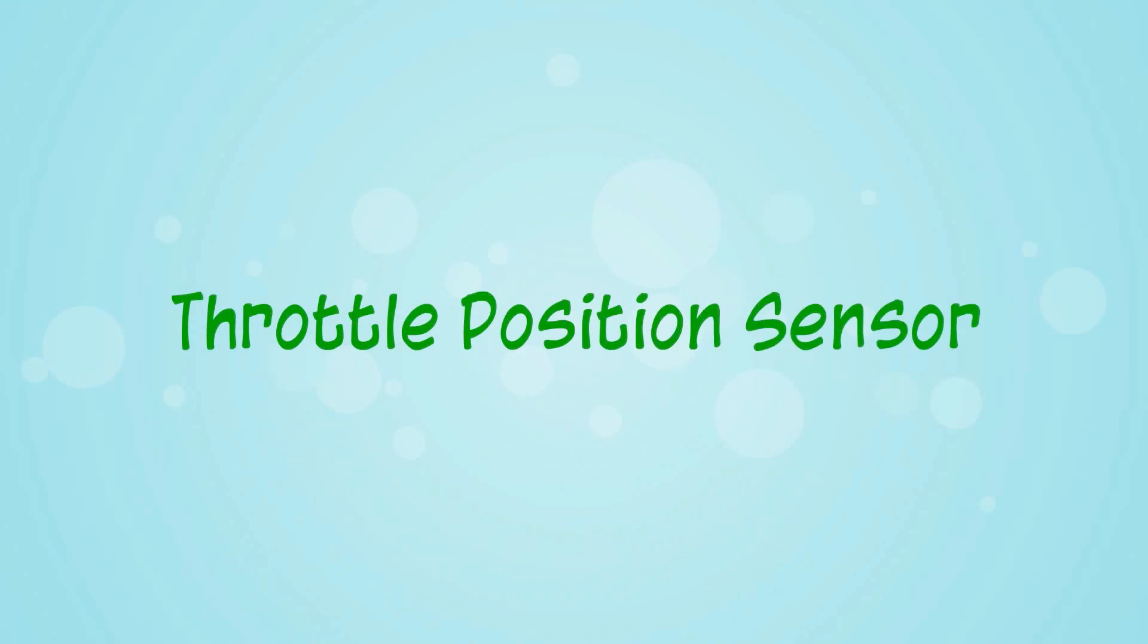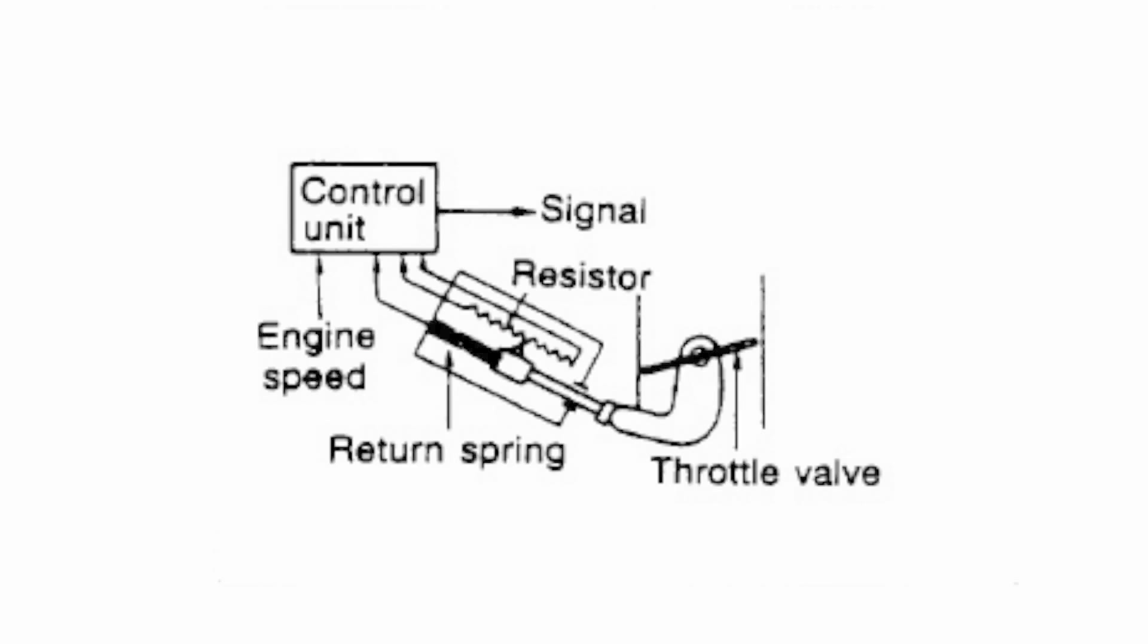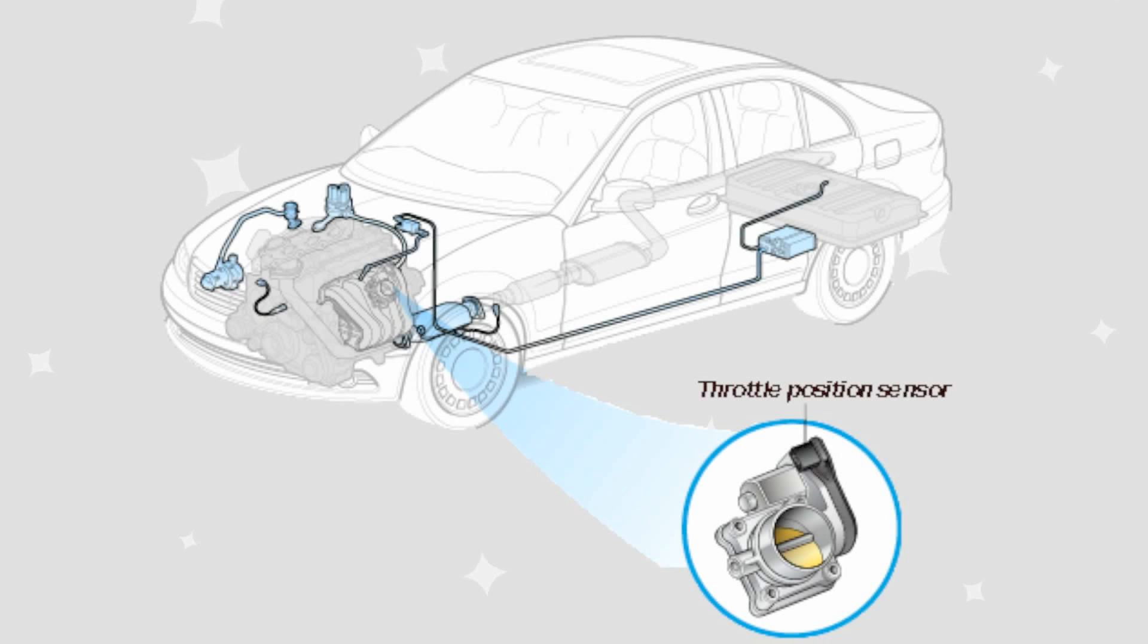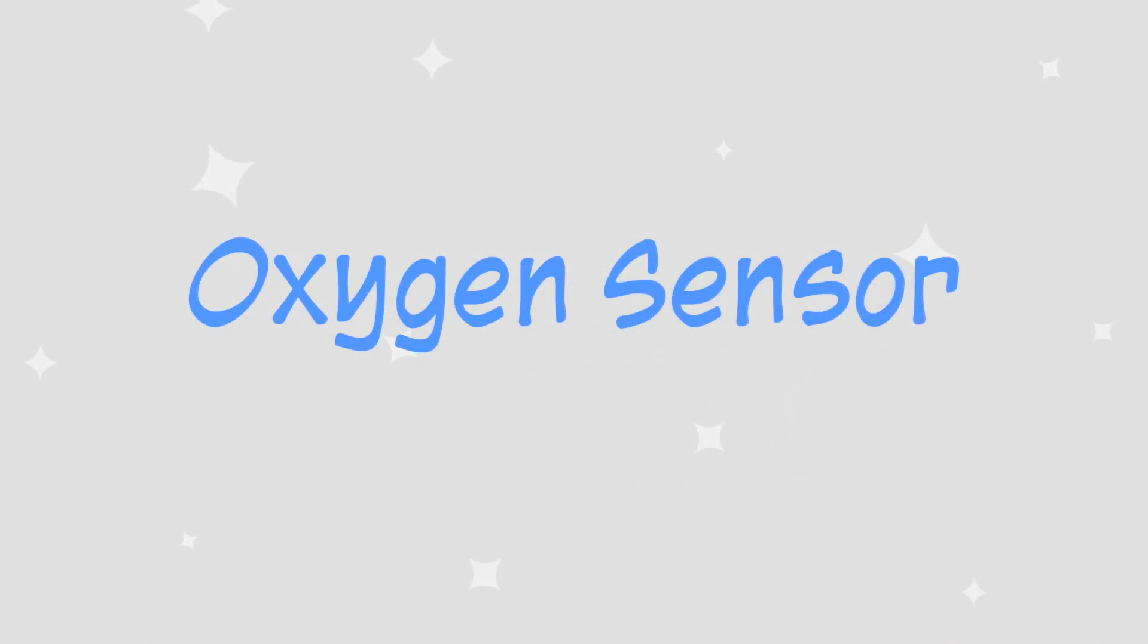Throttle Position Sensor. This sensor is linked with accelerator pedal and the throttle body. Sends information about injector pulse width and spark timing. It is located in throttle body and it is neither washable nor repairable.